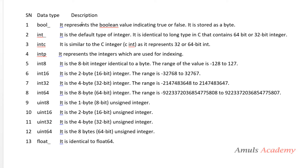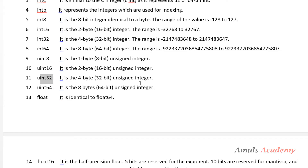Bool is used to store the boolean value, that is true or false. Integer is the default type. Int C is similar to the C integer. Int P represents integers used for indexing. Int 8 is an 8-bit integer, int 16 is a 2-byte integer — 1 byte means 8 bits, so 16 means 2 bytes, 32 means 4-byte integer, 64 is 8-byte integer. Int 8 is a 1-byte unsigned integer, 16 is 2-byte unsigned integer, 32 is 4-byte unsigned integer, uint 64 is 8-byte unsigned integer. Float is identical to float 64.